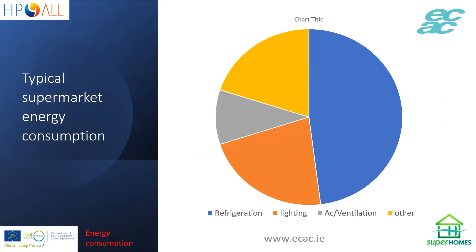Looking at typical energy consumption, I looked in particular at supermarkets because they have so much and such a variety of refrigeration plants. As you can see, refrigeration in the average supermarket is nearly half of the electrical consumption — in some supermarkets it's higher; I've heard of figures going up to 70%. These figures were taken before the move to LED lighting, so the lighting load would drop. AC and ventilation is obviously another huge load. There are obviously massive savings to be made if we can reduce the cost of running the refrigeration system.